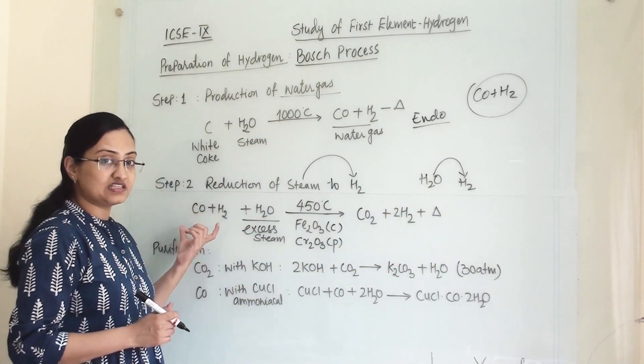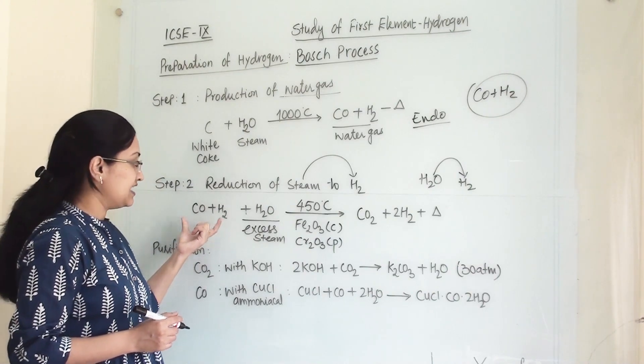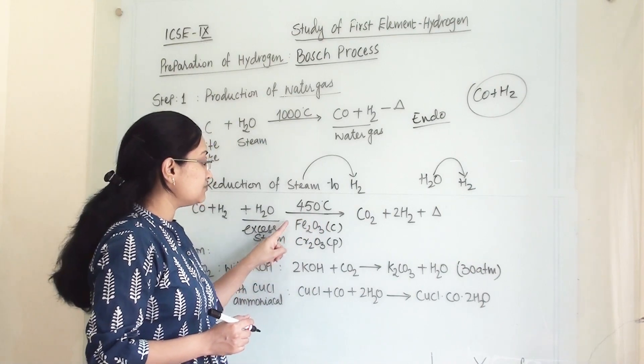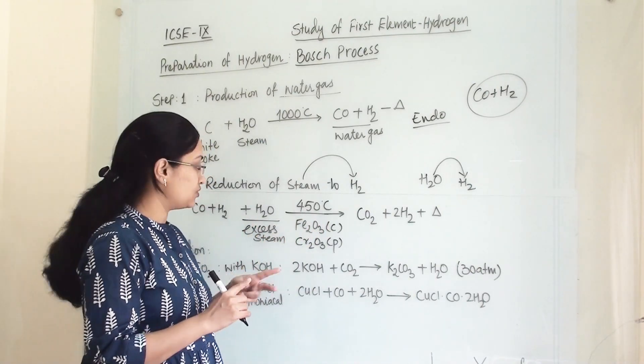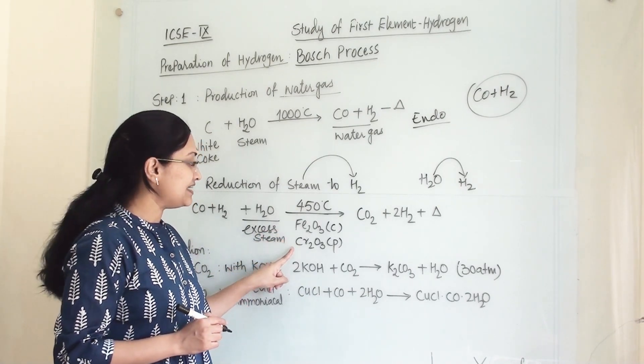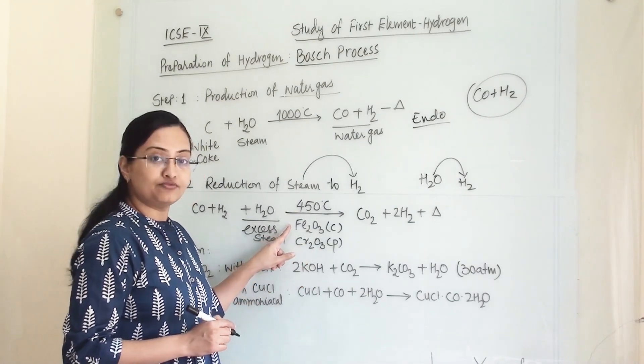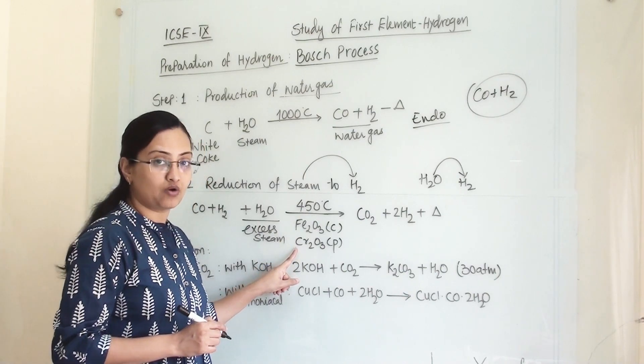In the second step, the excess steam is reacting with water gas at 450 degrees Celsius. Here we are using two things: first is catalyst and second is promoter. As catalyst we are using Fe2O3, and as promoter we are using Cr2O3. The names of the compounds are iron(III) oxide and chromic oxide.